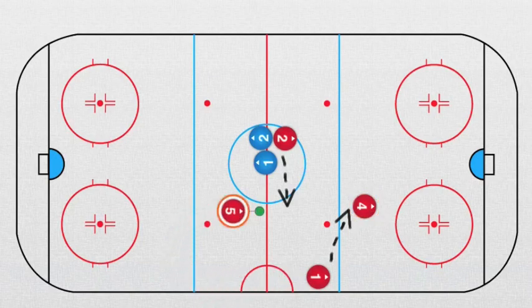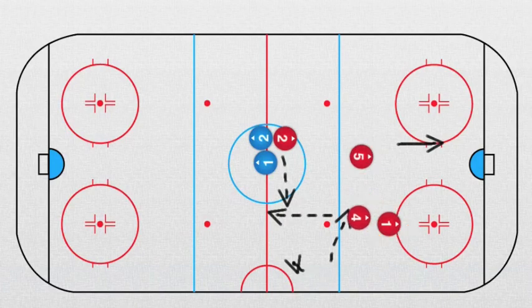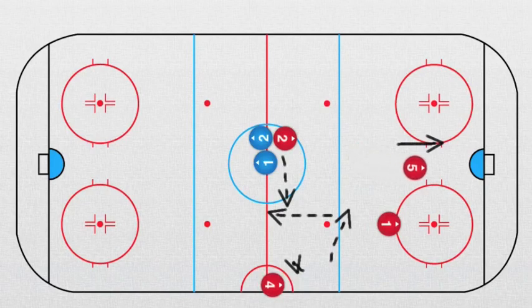This player goes this way and he receives a pass, he goes on the net and he takes a shot. After that, the player who played the pass goes this way, this player goes this way. After you shoot it you go back into the group. Take a look at the video.